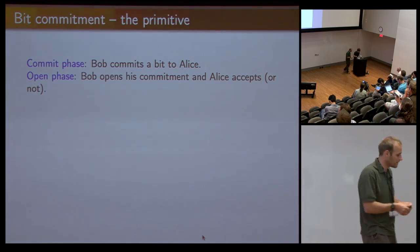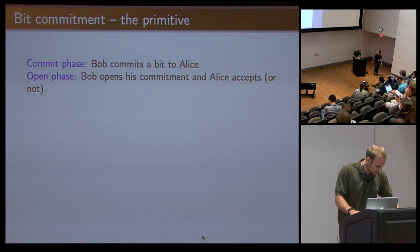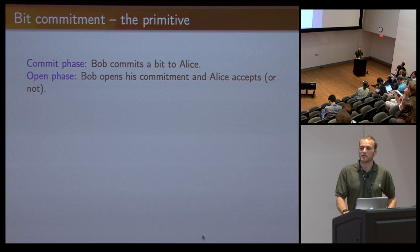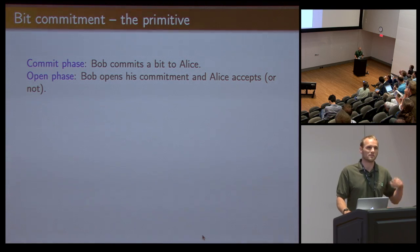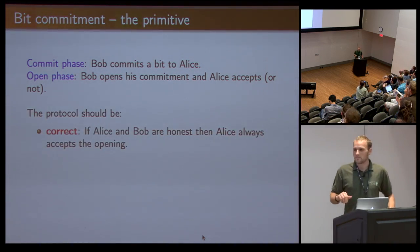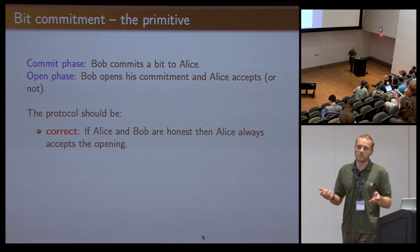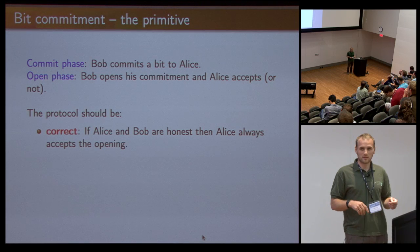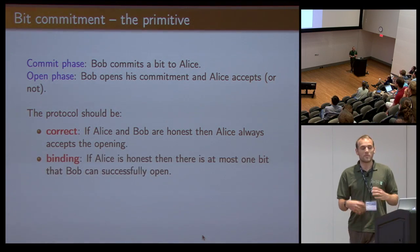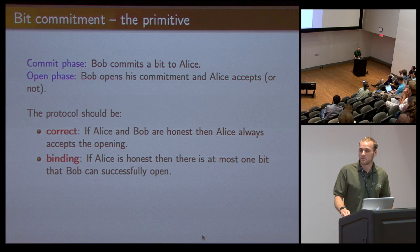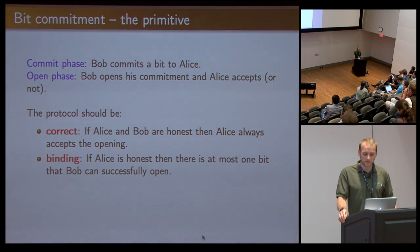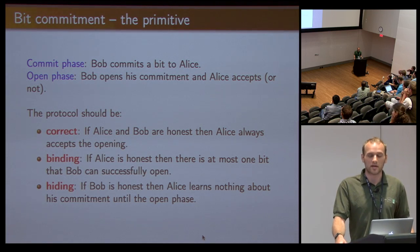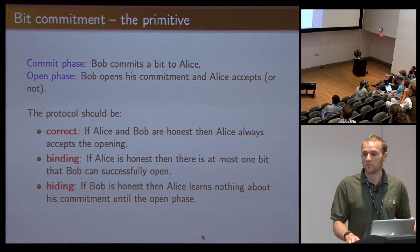There's the commit phase in which Bob commits a bit to Alice, and there's the open phase in which Bob opens his commitment and Alice decides whether to accept or reject. The protocol should have three requirements: it should be correct, so if both parties are honest then Alice always accepts the protocol; it should be binding, so if Alice is honest then there's at most one bit that Bob can reveal; and it should be hiding, so if Bob is honest then Alice shouldn't learn anything about his choice before the open phase.